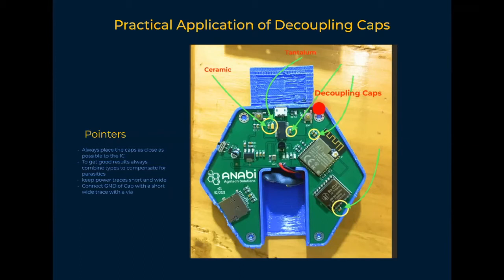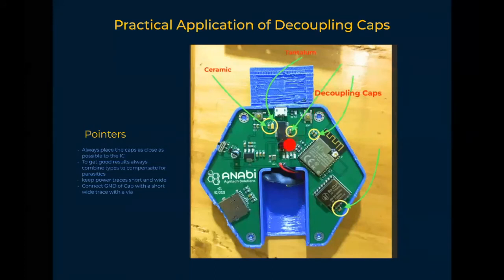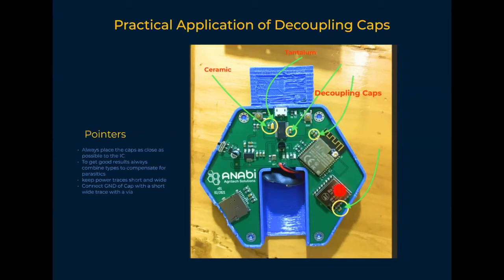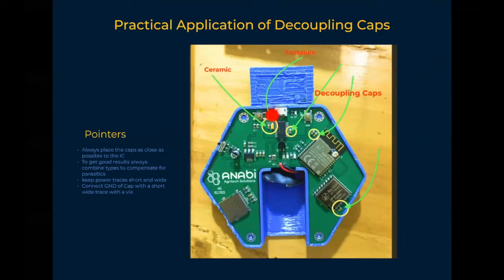These capacitors are always placed as close as possible to an IC. From the image, you can see this one here is a decoupling cap, very close to this IC. Same for this one here — this IC also has two of them very close. Another IC here also has a chain of them. This particular memory card holder here also has a decoupling capacitor just next to it. You can also notice here we have two types of caps — a ceramic capacitor here and a tantalum cap here. We'll be coming to that later.